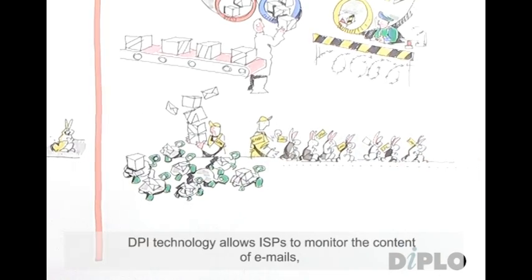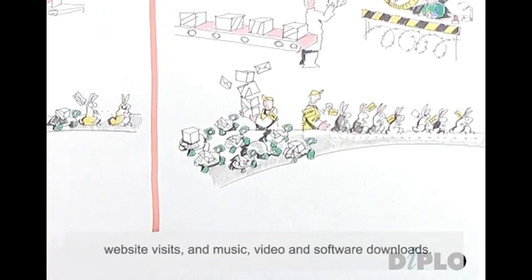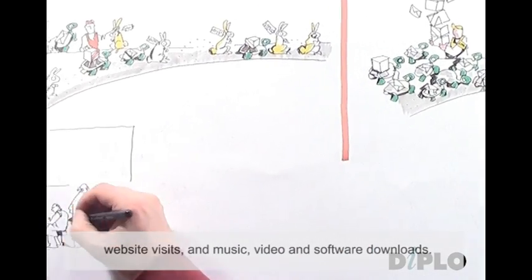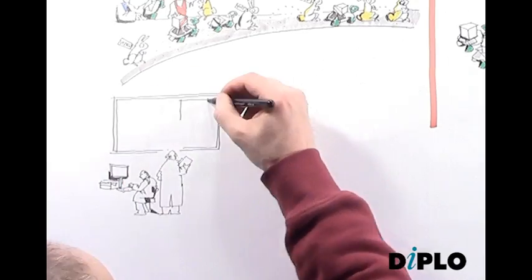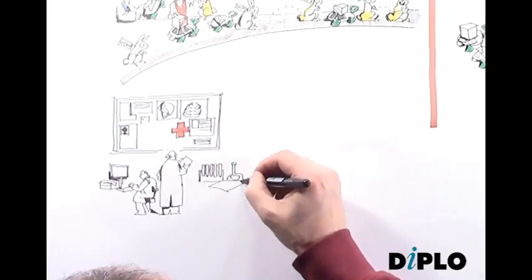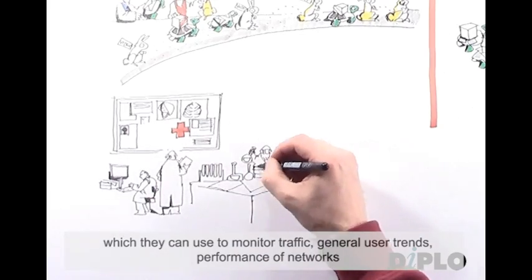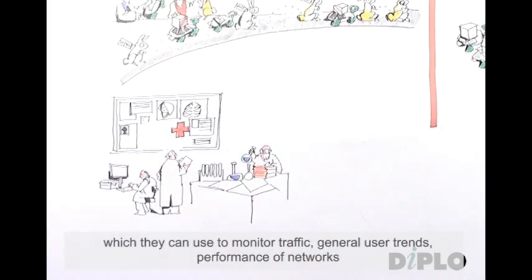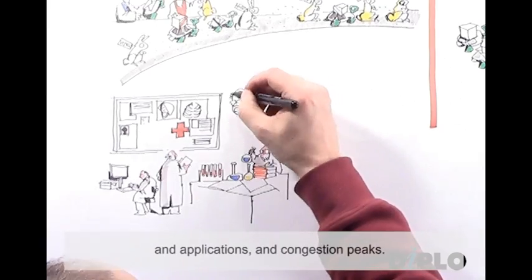DPI technology allows ISPs to monitor the content of emails, website visits, and music, video, and software downloads. This gives them access to vast amounts of personal information sent over the internet, which they can use to monitor traffic, general user trends, performance of networks and applications, and congestion peaks.